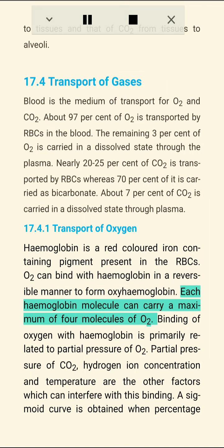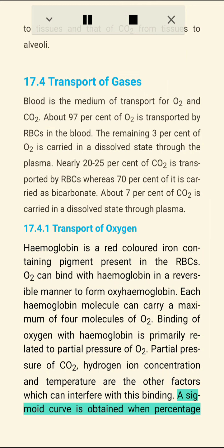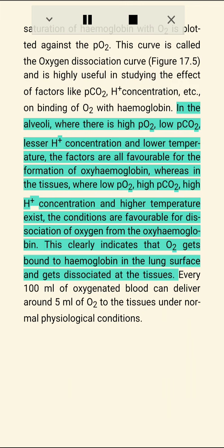Section 17.4.1: Transport of Oxygen. Hemoglobin is a red-colored, iron-containing pigment present in RBCs. O2 can bind with hemoglobin in a reversible manner to form oxyhemoglobin; each hemoglobin molecule can carry a maximum of four molecules of O2. Binding of oxygen with hemoglobin is primarily related to partial pressure of O2; partial pressure of CO2, hydrogen ion concentration, and temperature are other factors that can interfere. A sigmoid curve obtained by plotting percentage saturation of hemoglobin with O2 against pO2 is called the oxygen dissociation curve.